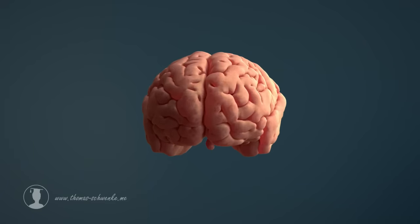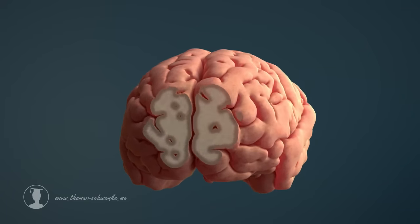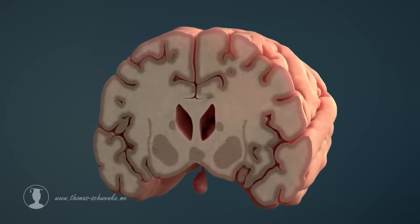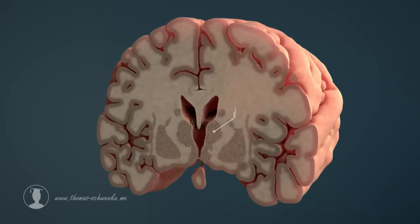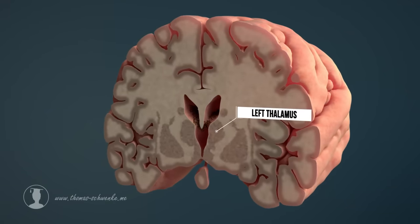Inside the brain, there are also clusters of nerve cell bodies that perform very specific tasks. The thalamus is an extremely important area, which is also known as the gateway to consciousness, and is part of the diencephalon.